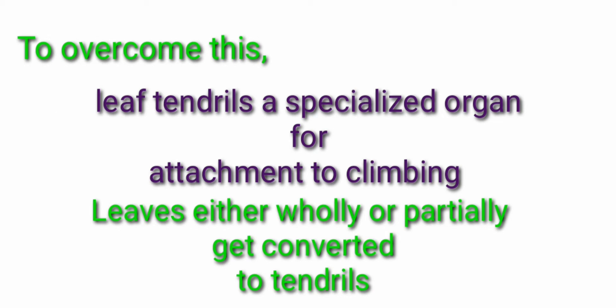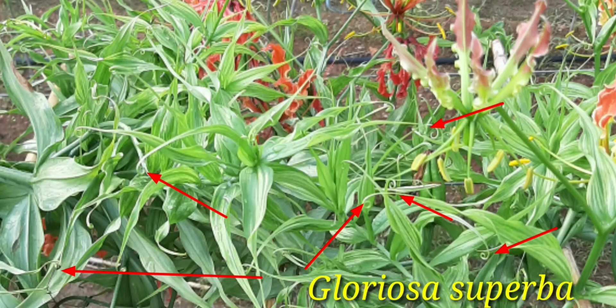The leaves either wholly or partially get modified into tendrils. For example, the leaf tip of Gloriosa superba gets modified into tendrils. This is the Gloriosa superba where the red arrow indicates the tendrils. So this is the partial modification of leaf into tendrils. And the whole modification of leaf into tendrils is in Lathyrus where the entire leaf gets modified into tendrils. Next one is the partial modification where the apical leaflet of Pisum is modified into tendrils. So do watch these real plants if you have a chance. They are the awesome creatures of nature.